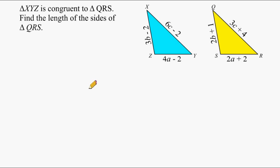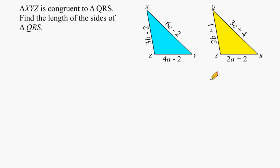In this problem, it states that triangle XYZ, shown here in the blue, is congruent to triangle QRS, which is shown in the yellow. Our job is to find the length of the sides of triangle QRS. Each side of QRS is represented by an expression, but we need to figure out the actual side length of each one of these three sides.